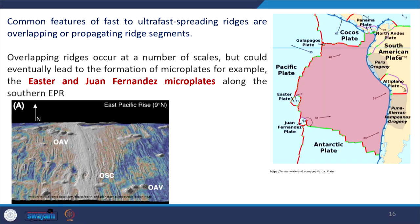Common features of fast and ultra-fast spreading ridges are overlapping spreading centers (OSC) and propagating ridge systems. Overlapping ridges occur at a number of scales and could eventually lead to the formation of microplates. Examples are the Easter Plate and Juan Fernandez Plate — microplates that were once part of larger plates and may in geological future be accommodated by neighboring plates depending on spreading rate and ridge propagation.